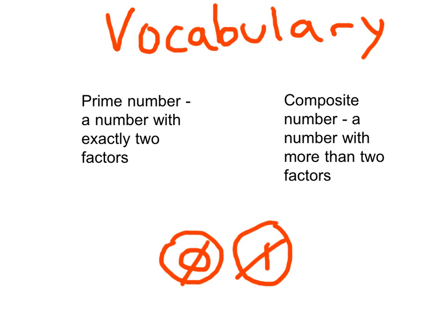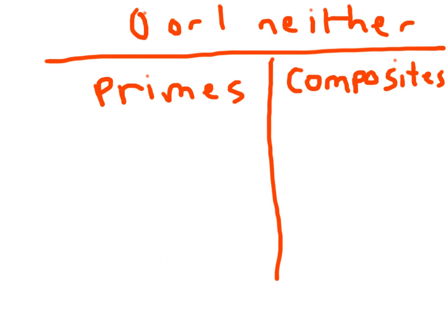Now, 0 and 1 — we cross those out. Because 0 and 1 are neither prime nor composite. Go ahead and make this table and chart for yourself. We've got 0 and 1 which are neither. Remember, they are neither prime nor composite. Then we're going to list some prime numbers and some composite numbers.